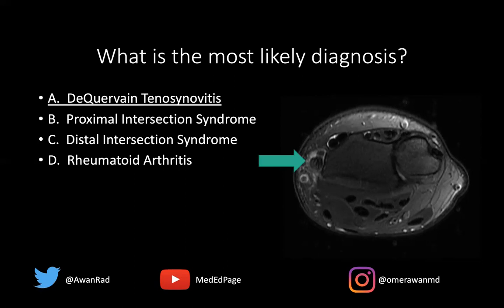This is not proximal intersection syndrome because that happens more proximally at the distal forearm. The first extensor compartment tendon crosses over the second compartment, and as it crosses over, it can result in a stenosing tenosynovitis between the first and second compartments — that's known as proximal intersection syndrome.